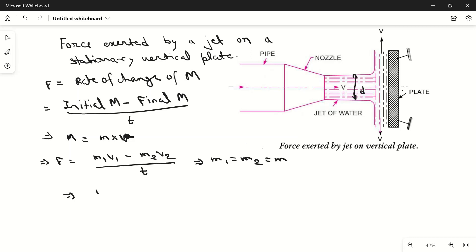If we take m common, then it will be m divided by t times v1 minus v2. So this is force. This will be equal to rho into A into V times v1 minus v2. How did we get this quantity? We know that mass flow rate is density times area times velocity.